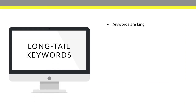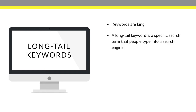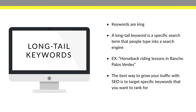When it comes to keywords, long tail keywords are king. A long tail keyword is basically a specific search term that people type into a search engine. For example, "horseback riding lessons in Rancho Palos Verdes" — that is one long tail keyword. The best way to grow your traffic is to target specific keywords you want to rank for. If I want to rank for "horseback riding lessons in Rancho Palos Verdes," that's the blog post I would write and specifically target.